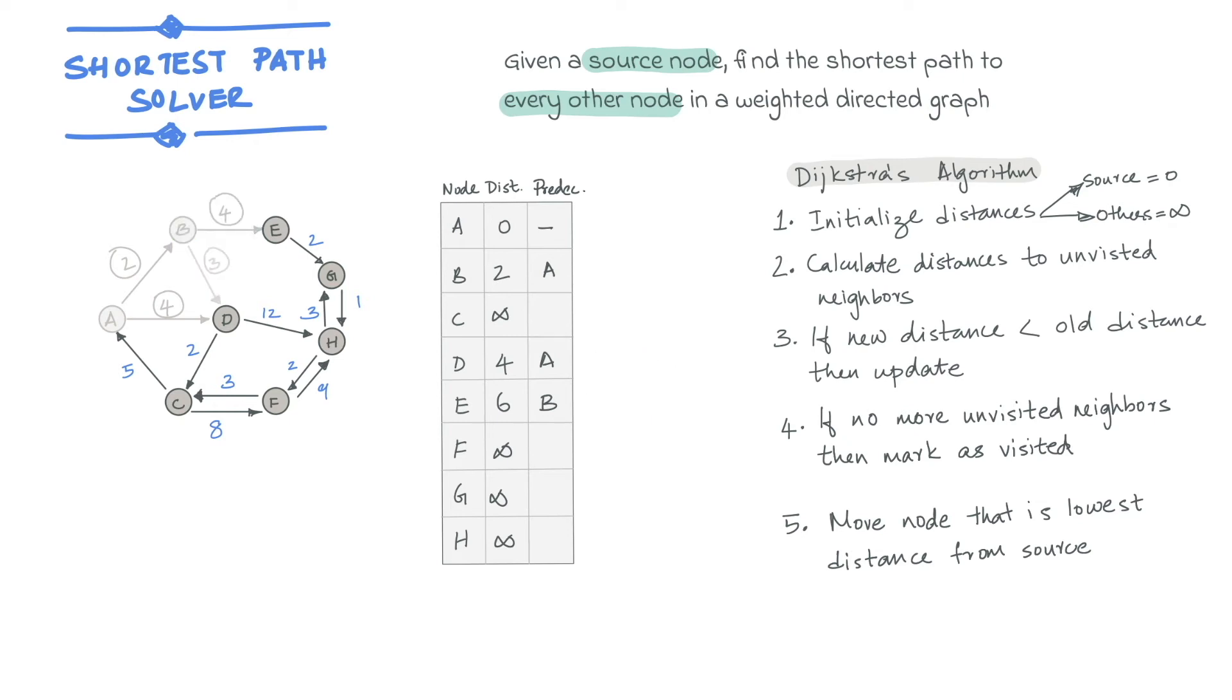From here, we move to the unvisited node D, since that has the lowest distance value. I'll repeat a few more of these till we get to node G.